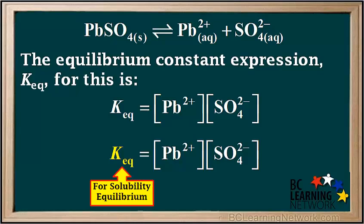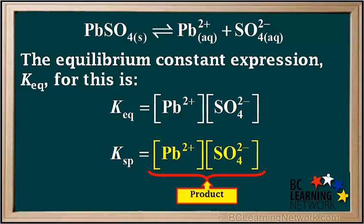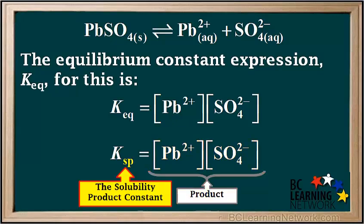If the equation is specifically a solubility equilibrium, we change Keq to Ksp, which is called the solubility product constant. The concentration of these ions depends on the solubility, and the equilibrium constant is the product of these concentrations. Therefore, it's called the solubility product constant, or Ksp for short.